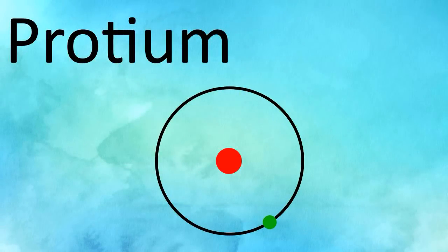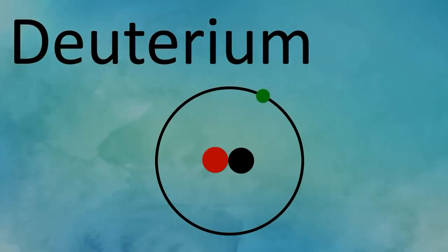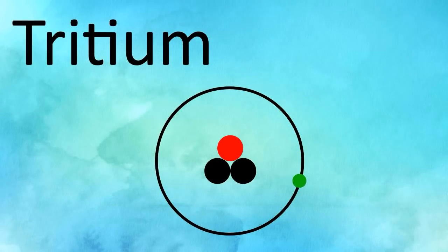Protium consists of one proton in its nucleus, but uniquely for any of the elements, no neutrons. The nucleus is surrounded by one electron. Deuterium consists of one proton and one neutron in its nucleus, again surrounded by one electron. Tritium consists of one proton and two neutrons in its nucleus, again surrounded by one electron.